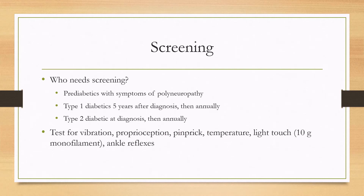Who should be screened? Pre-diabetics with symptoms of polyneuropathy, as well as type 1 diabetics five years after diagnosis then annually, and type 2 diabetics at diagnosis then annually. You should test for vibration, proprioception, pinprick, temperature, light touch with the 10-gram monofilament, and ankle reflexes.